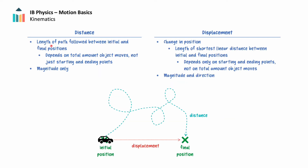Distance is the length of a path followed between an object's initial and final positions or locations in space. This depends on the total amount an object moves, not just its starting and ending points.